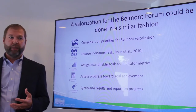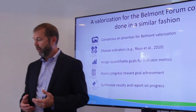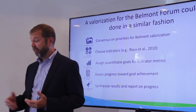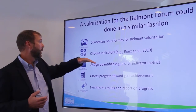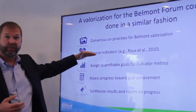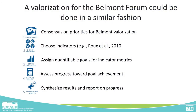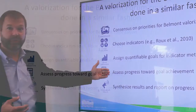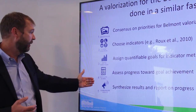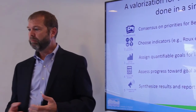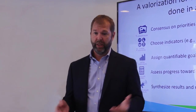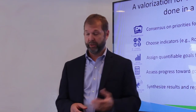We thought we might be able to approach Belmont valorization in a similar five-step fashion. Can we develop consensus on the priorities for Belmont valorization? If we do that, can we choose indicators that reflect on that? Once we have those indicators and measures, can we assign quantifiable goals or indicator metrics? Then we should be able to assess progress towards achieving our goals, synthesize the results, and report on progress — which might look something like the results for the valorization effort done in San Francisco that Bill Dennison will talk about.